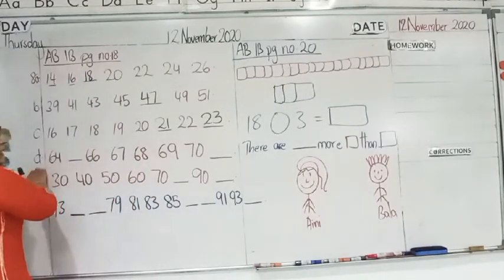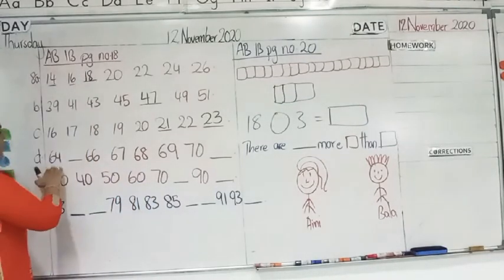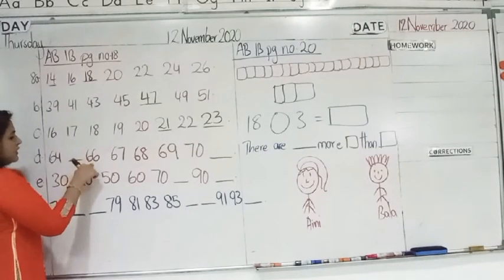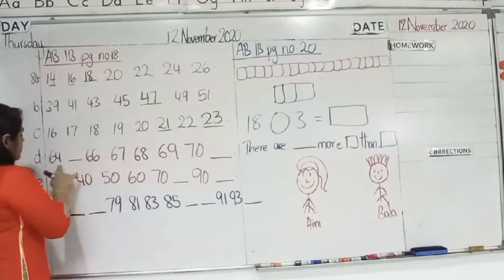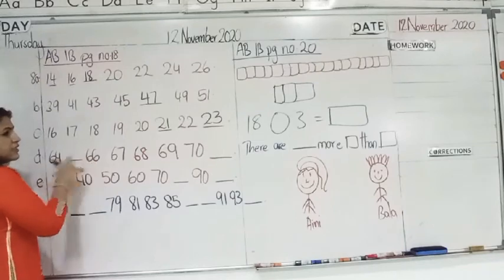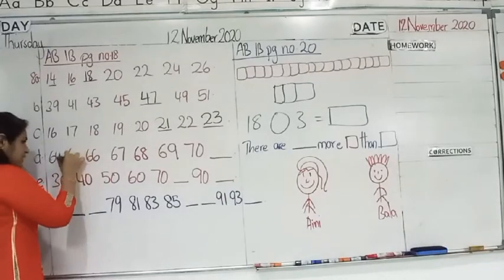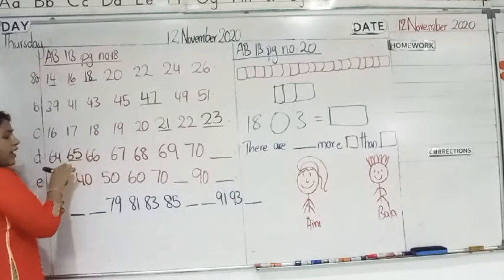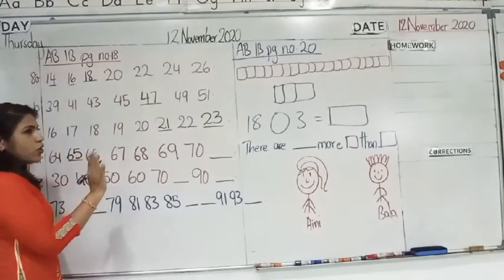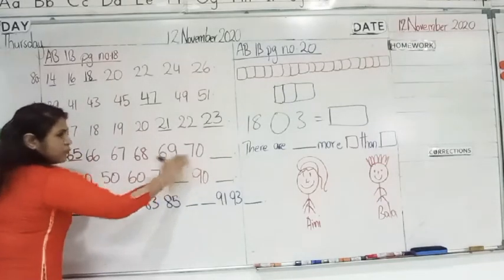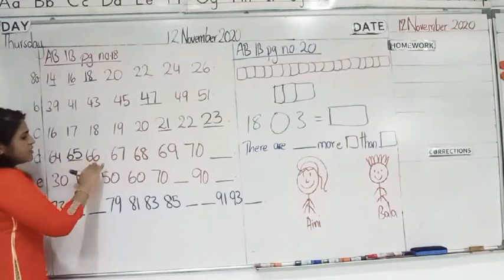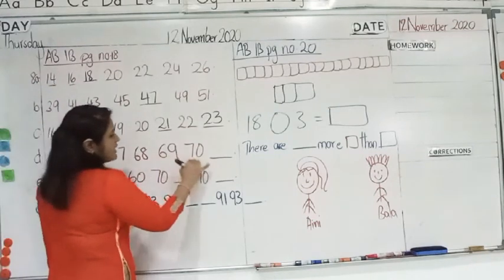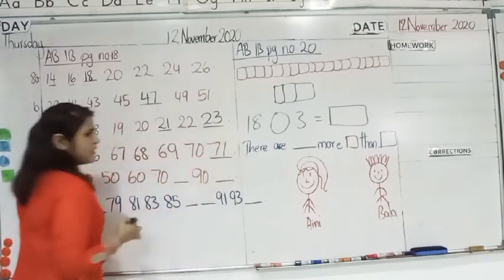Now, let's go to letter D. 64, 66, 67. Did we skip any number? No. We are again counting in sequence in a straight line. 64, 65, 66, 67, 68, 69, 70 and 71.